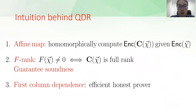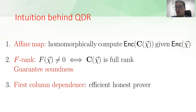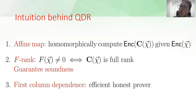An intuition of why those properties are needed: the matrix has to be affine because the verifier only has an encryption of x and must homomorphically compute the encryption of C(x) from it. The property that det(C(x)) = f(x) is needed for soundness—roughly, if x is a false statement, then f(x) ≠ 0, which means C(x) has full rank, allowing us to break the underlying KernMDH-based assumption. The first column dependence is a technical requirement needed to ensure that the honest prover is efficient.